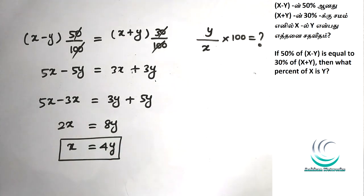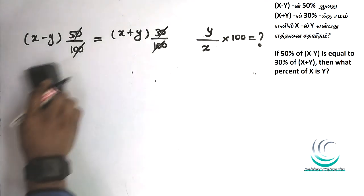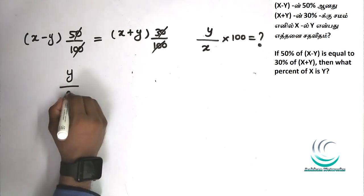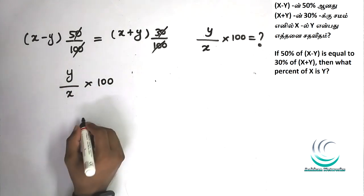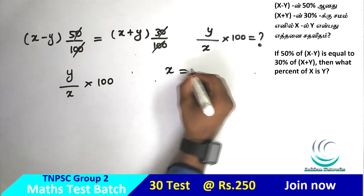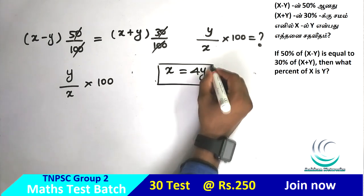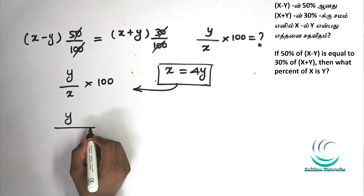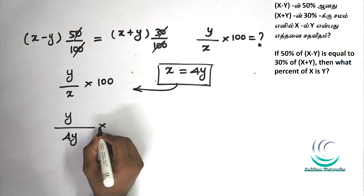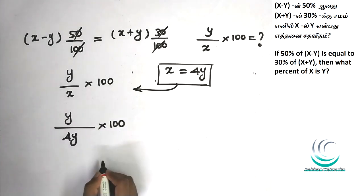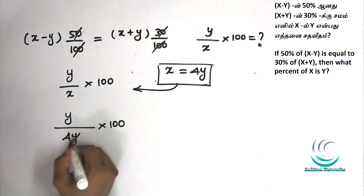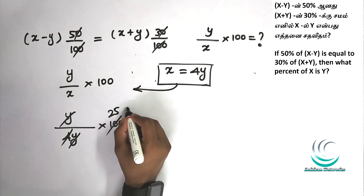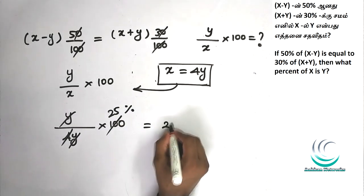Remember how to apply? So apply: x is equal to 4y. The question asks for y by x into 100. So this value is 4 by x. Since x is equal to 4y, you can apply this value. y divided by x — since x is 4y, into 100, just simplify, cancel. 4 or 100 cancel gives 25. So the answer is 25.